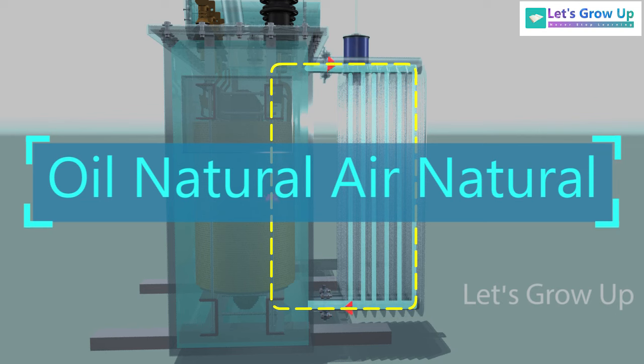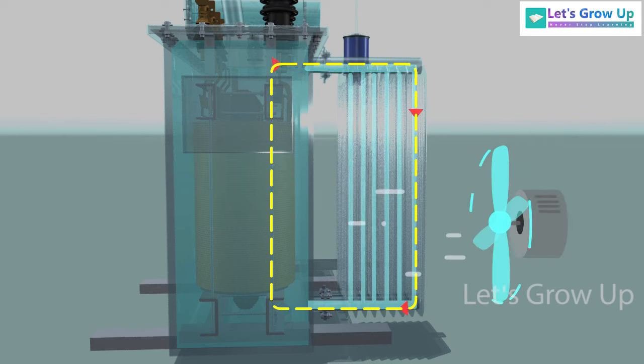In the large size transformer, the cooling process of radiator can get faster by the force of air, that means external fans are provided. This method is called oil natural air forced cooling.